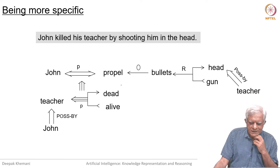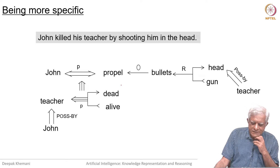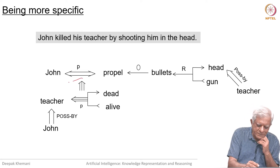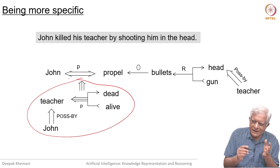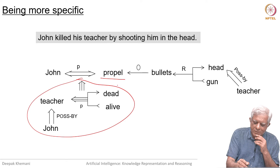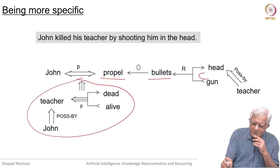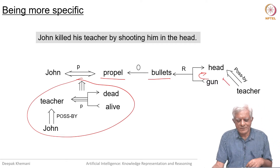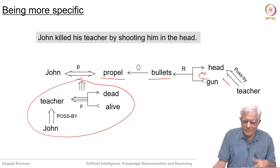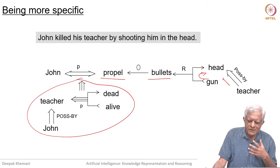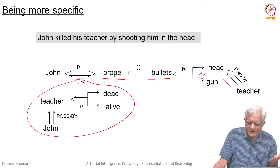It could be that John killed his teacher by shooting him in the head. The second part — the teacher being killed — is the same, but the action has changed and is more specific. Now he propelled bullets from the gun to the head possessed by the teacher. You can see this is how you would imagine things to be happening.